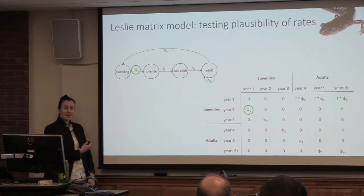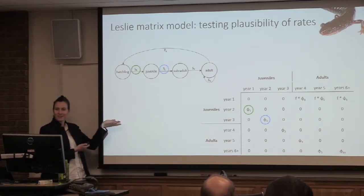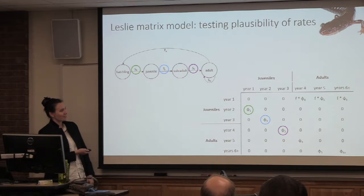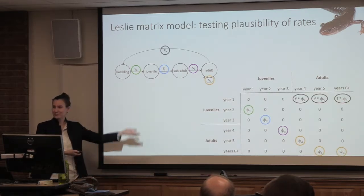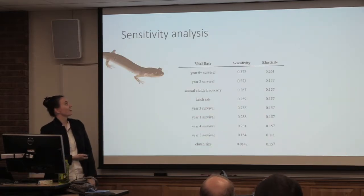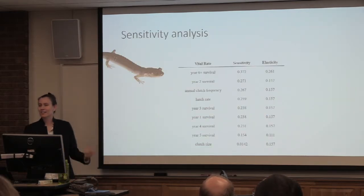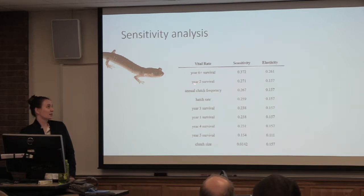We're connecting the life history diagram to the things in the table, including the fecundity terms just described. We ran a sensitivity analysis using that Leslie matrix model, which shows that adult survival — or older adult survival specifically — young size class survival, annual clutch frequency, and hatch rate are probably our most sensitive rates.